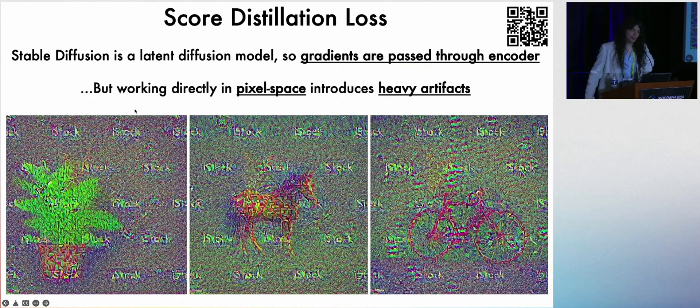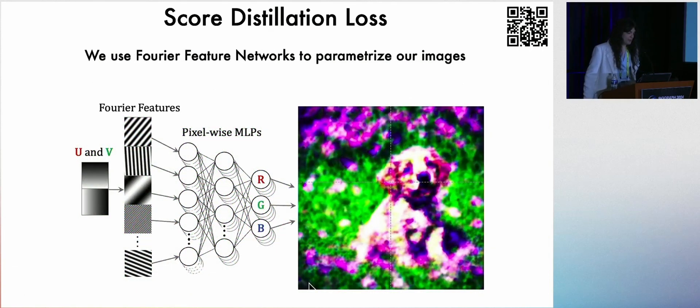But if we do this naively on a bunch of pixels using stable diffusion, we actually get a bunch of problems, because we have to pass the gradient through the encoder, and that results in a bunch of adversarial artifacts. So instead, we parameterize these images using Fourier feature networks, where we have an MLP that takes X and Y as an input, and in the end generates colors as an output. It's just another way to represent an image.